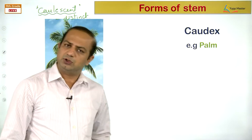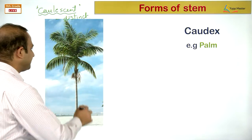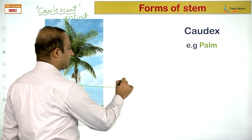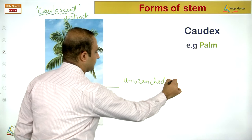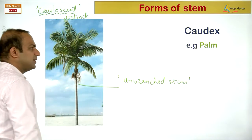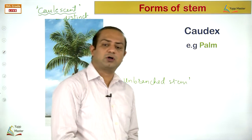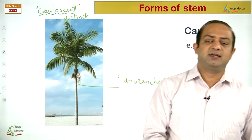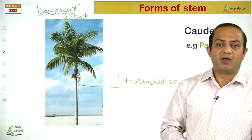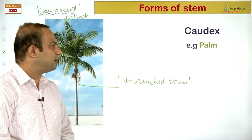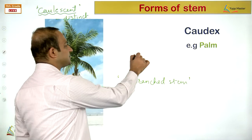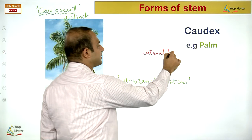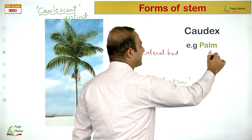Lianas are woody climbers seen in tropical rainforests. The difference between creepers and trailers: both creep on the ground and have weak stems, but creepers bear adventitious roots at their nodes enabling vegetative propagation, while trailers do not. The creeper and trailer are different — creepers have adventitious roots at nodes; trailers do not.